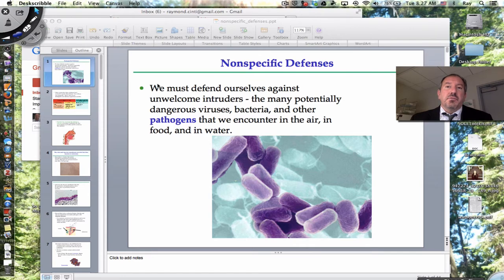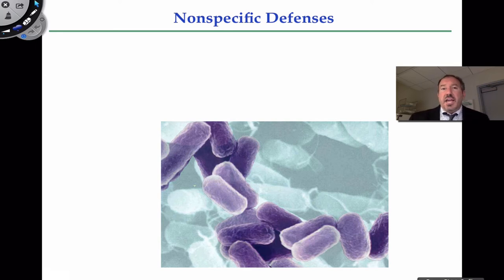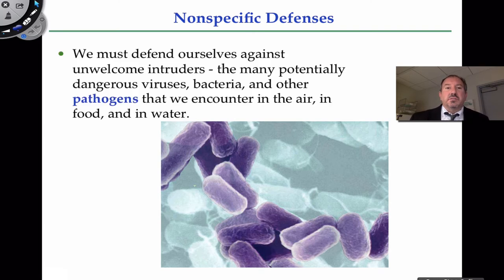That discussion will come up in a separate video. Today I'd like to talk about this generic or non-specific defense. This picture is a scanning electron micrograph of bacterial cells — just one example of a germ that can cause difficulty. We could have foreign proteins, fungi, parasites, bacteria. All these disease-causing agents are called pathogens, and we have a defense against these unwelcome intruders that can be potentially dangerous — some viruses and bacteria can be almost lethal.